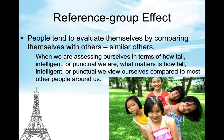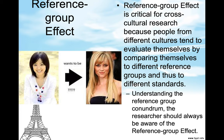People tend to evaluate themselves by comparing themselves with similar others. For example, my grandson compares himself to kids who play football and soccer, because those are the people similar to him. When we are assessing ourselves in terms of how tall, intelligent, or punctual we are, what matters is how we view ourselves compared to most other people around us. If we live in a family where nobody is ever punctual, then probably punctuality has a different meaning for us. Reference group effect is critical for cross-cultural research because people from different cultures evaluate themselves by comparing themselves to different reference groups and thus to different standards.